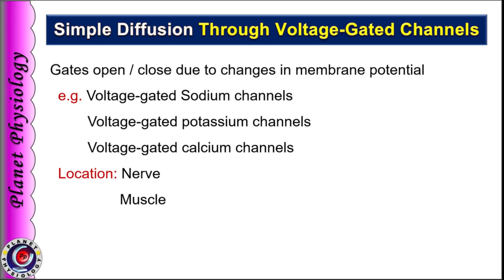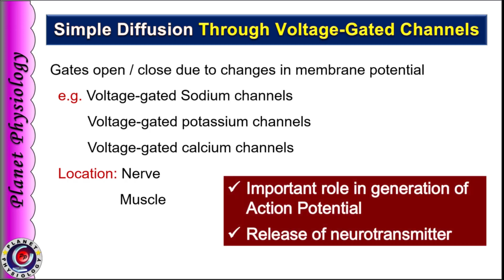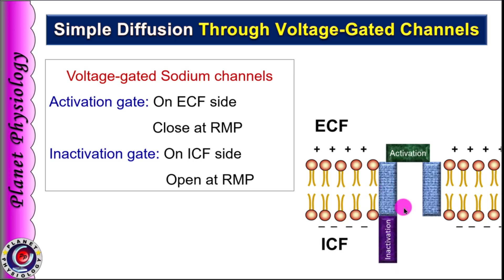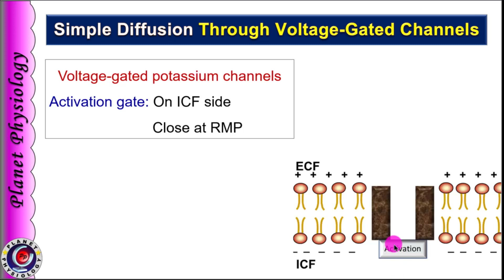These channels are mainly found in excitable tissues like nerves and muscles, and they play an important role in the generation of action potential as well as release of neurotransmitter from nerve terminals. Voltage gated sodium channels have two gates: an activation gate on the extracellular fluid side, which is closed at resting membrane potential, and an inactivation gate on the intracellular fluid side, which is open at rest. In voltage gated potassium channels, there is only one activation gate on the intracellular fluid side, which is closed at resting membrane potential.